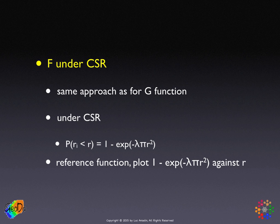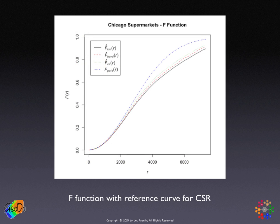For our Chicago supermarket example, it looks like this. The theoretical function is the blue line, the black line is the observed line, and the green and red dashed lines are different edge corrections. We see that the black curve is not above the Poisson reference line, but is below it.